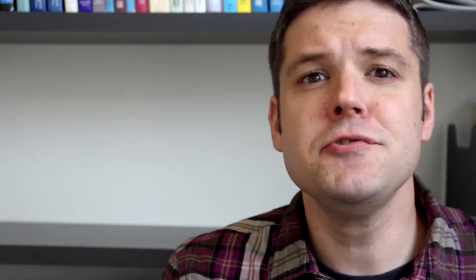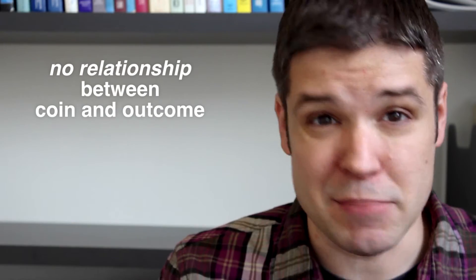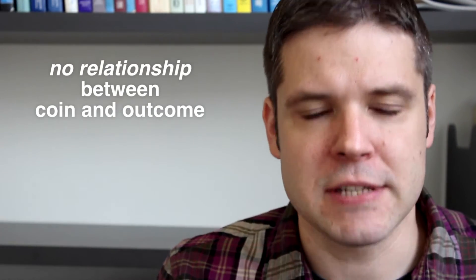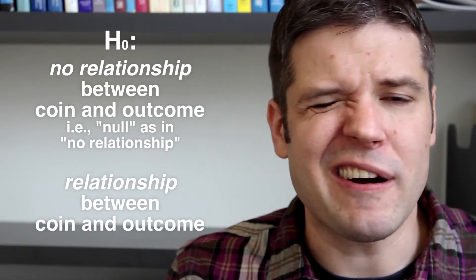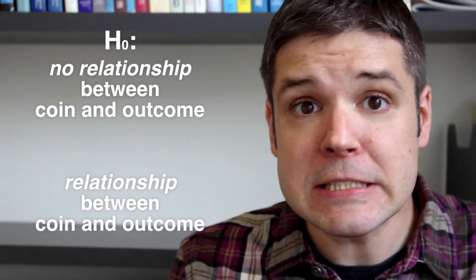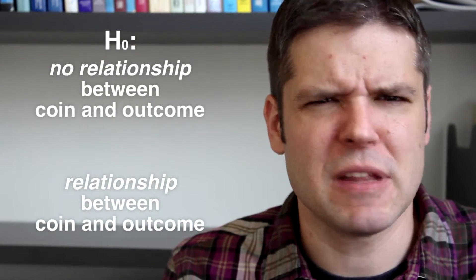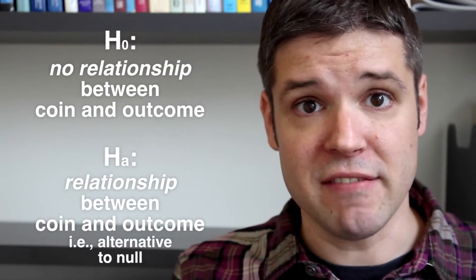Another way to frame this disagreement is that I argue that there is no relationship between flipping this coin in particular and the outcome of heads or tails. Statisticians call this the null hypothesis. Whereas you argue there is a relationship between tossing this coin and getting a certain outcome. Let's say heads. This is called the alternative hypothesis.